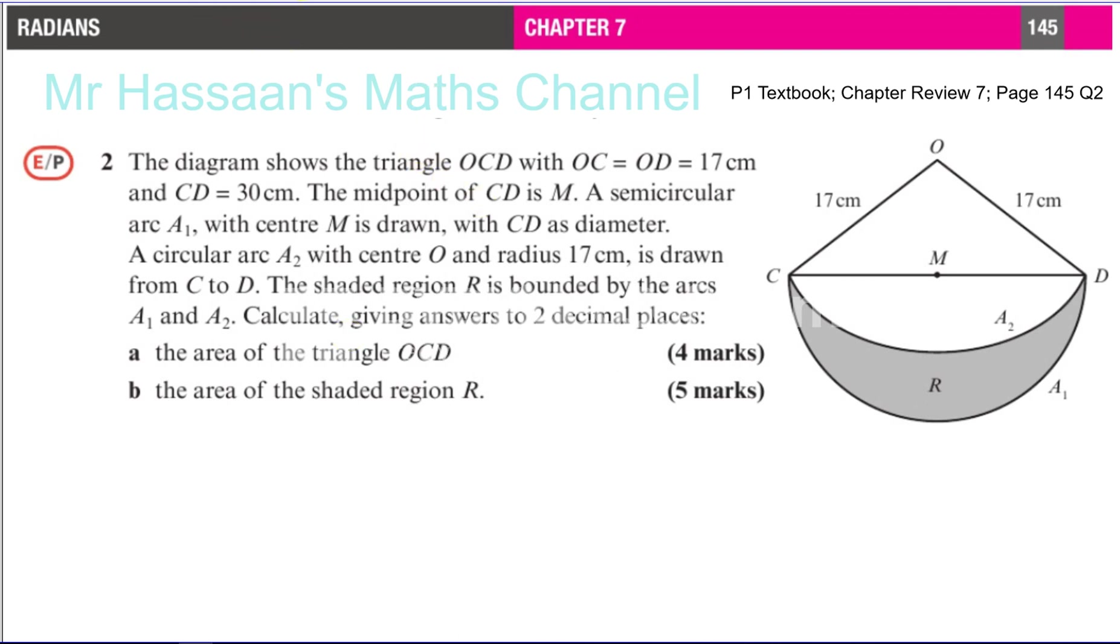This is from the chapter on Radian Measure. So here we're asked, first of all, to find the area of the triangle OCD. Now we're told that OC is equal to OD, which is marked 17 centimeters, and CD equals 30 centimeters.